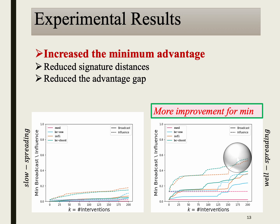Our main objective was to increase the minimum advantage among nodes. We plotted the number of interventions on the x-axis and the minimum advantage on the y-axis, showing the performance of various heuristics in increasing both broadcast and influence measures. A higher increase in the minimum advantage indicates better performance. We noticed that both the Influ and BC chord heuristics consistently show the most improvement for both measures.